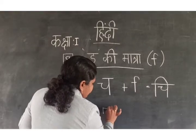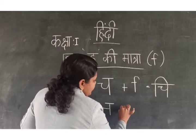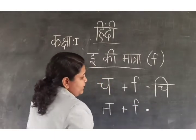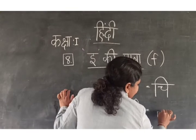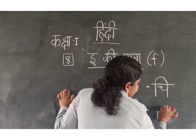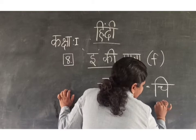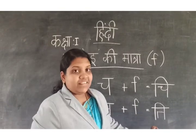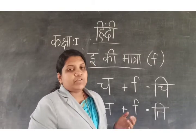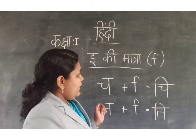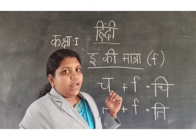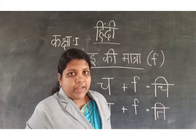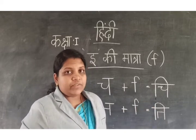One more example. Here I am going to write the letter Ta. Ta plus Ikki Matra — which way will we write? First we will write the letter Ta, then on the left side we will write the symbol. So, Thi. Say with me: Thi. Always remember: whenever you are writing Ikki Matra, the Ikki Matra always goes on the left side of the letter.